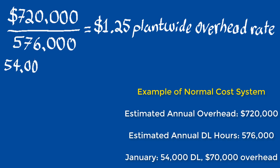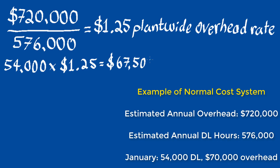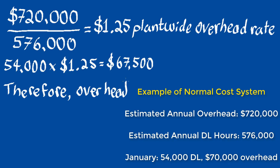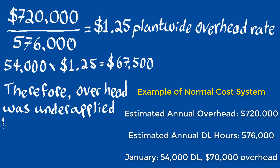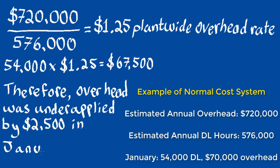This gives us a plant-wide overhead rate of $1.25. The next step is to multiply the actual direct labor hours by the plant-wide overhead rate to determine that the applied overhead was $67,500. Therefore, given that the actual overhead was $70,000, we can determine that in the month of January, management under-applied the overhead by $2,500.